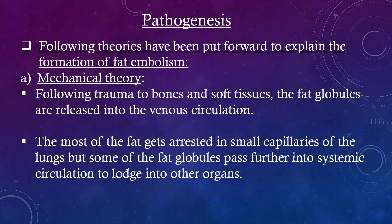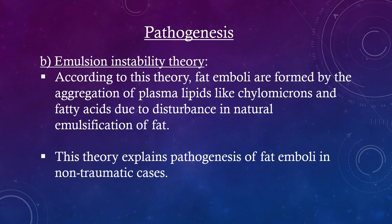Pathogenesis: The following theories have been put forward to explain the formation of fat embolism. Mechanical Theory: Following trauma to bones and soft tissues, fat globules are released into the venous circulation. Most of the fat gets arrested in small capillaries of the lungs, but some fat globules pass further into systemic circulation to lodge in other organs. Emulsion Instability Theory: Fat emboli are formed by the aggregation of plasma lipids like chylomicrons and fatty acids due to disturbance in natural emulsification of fat.